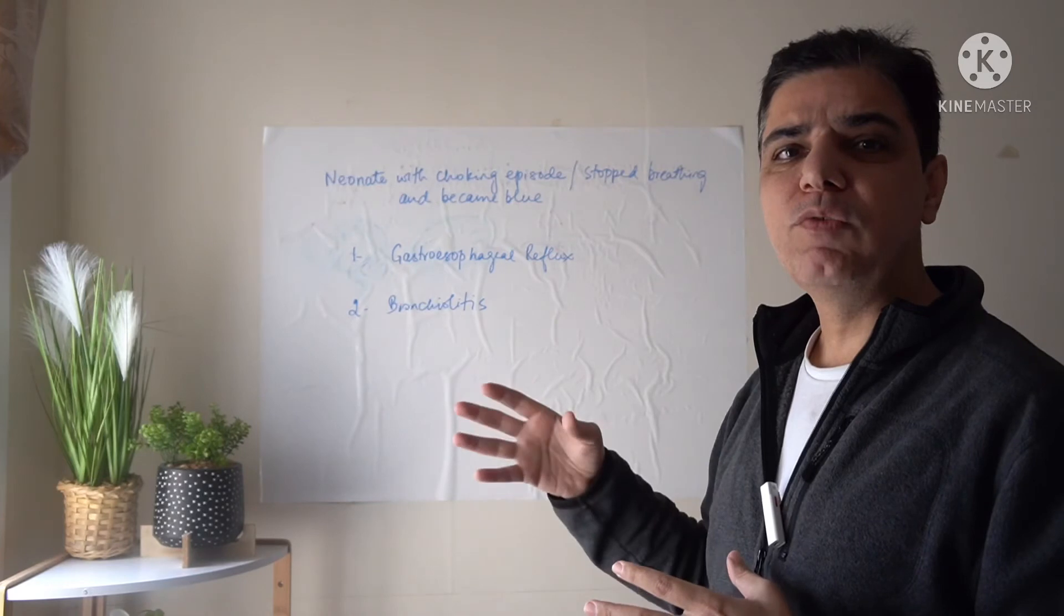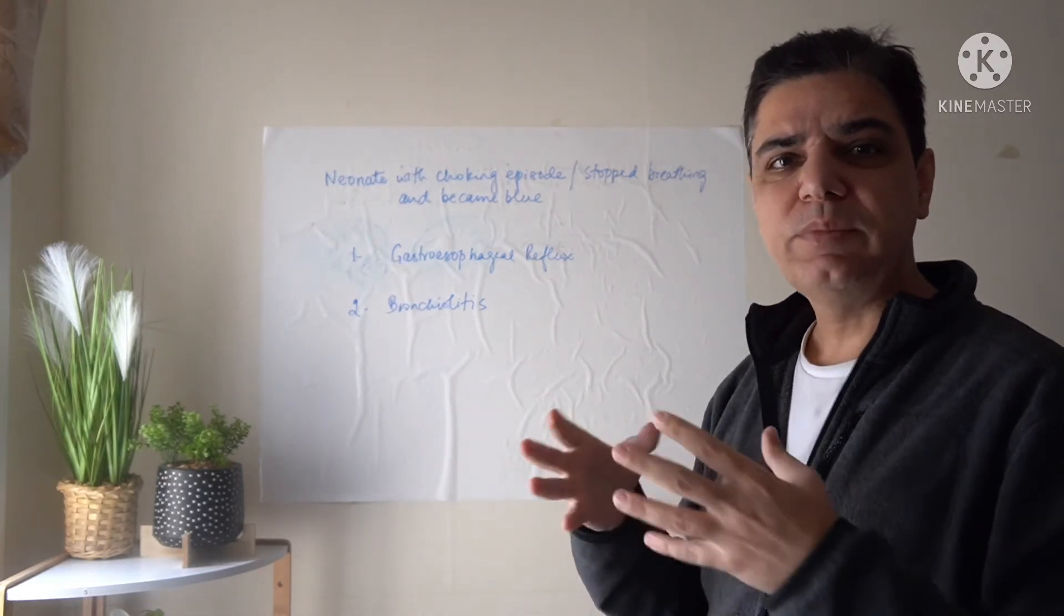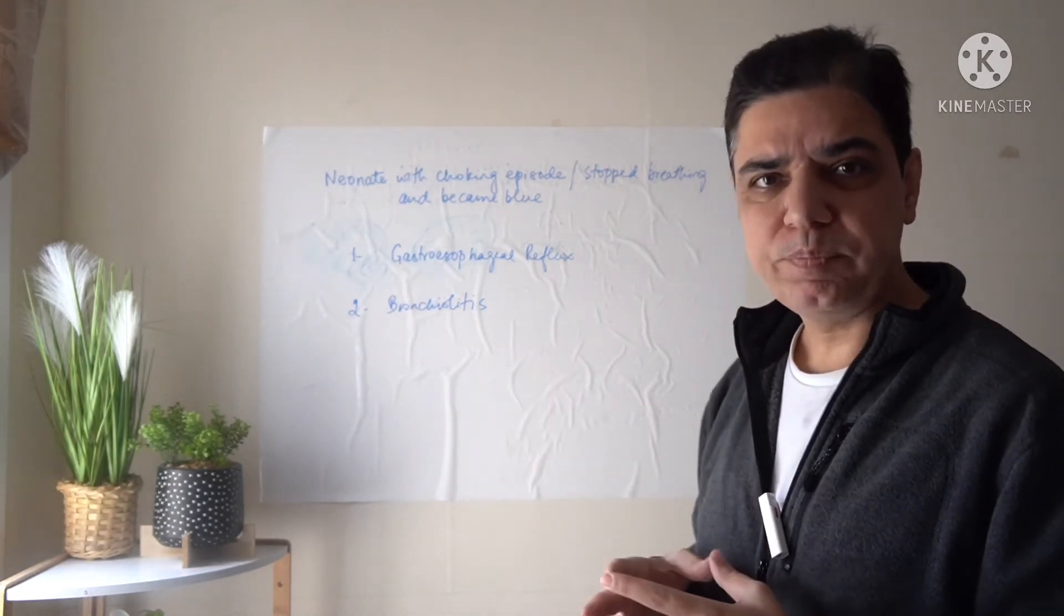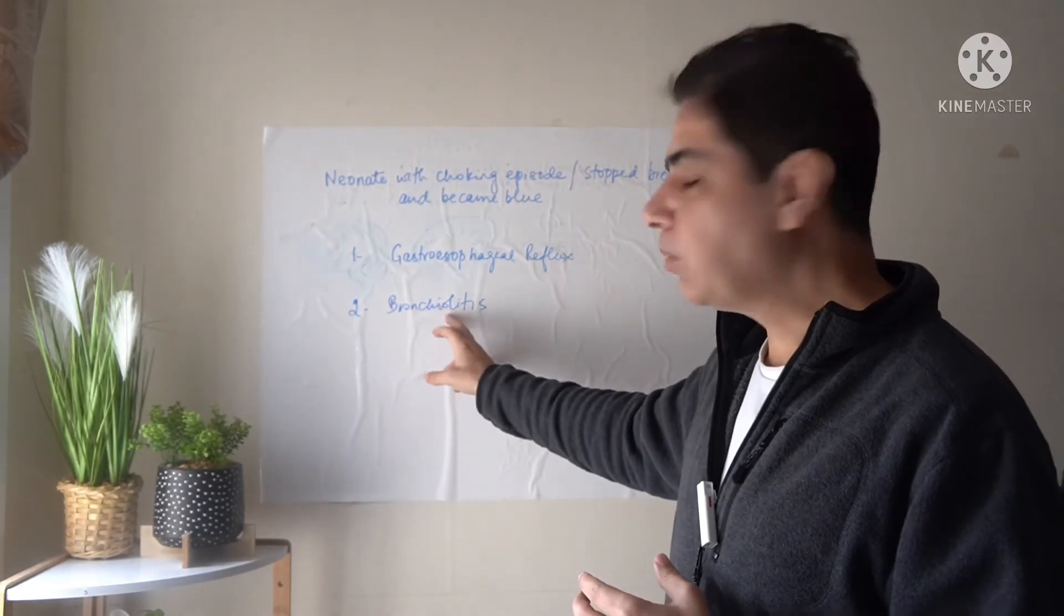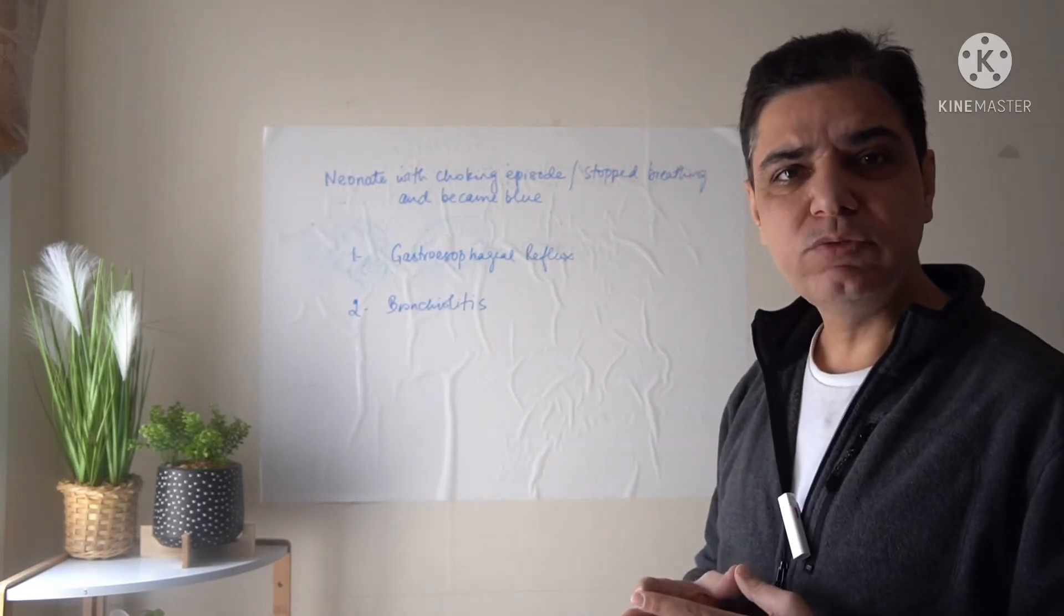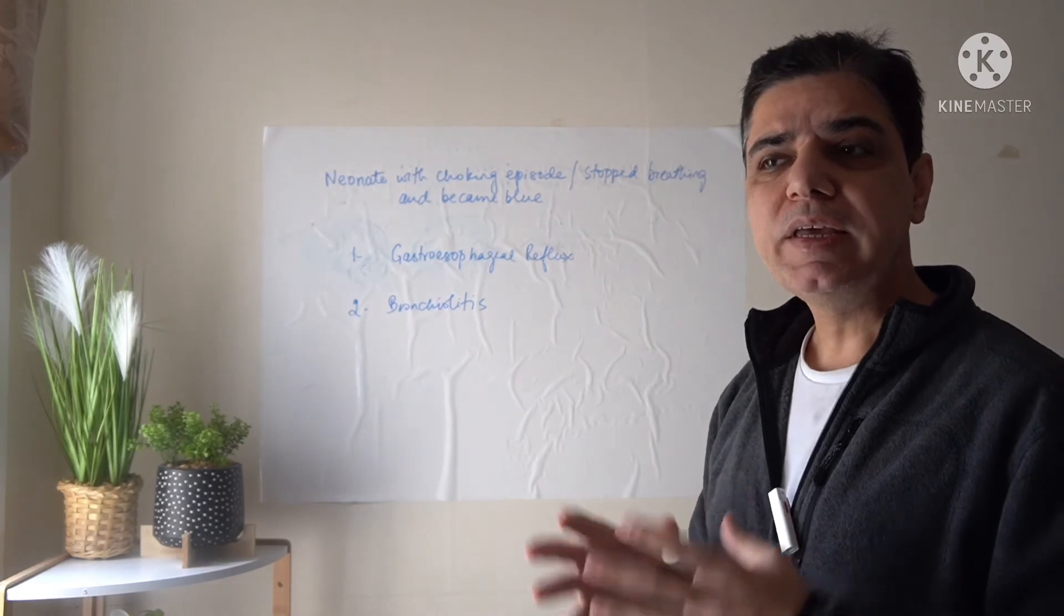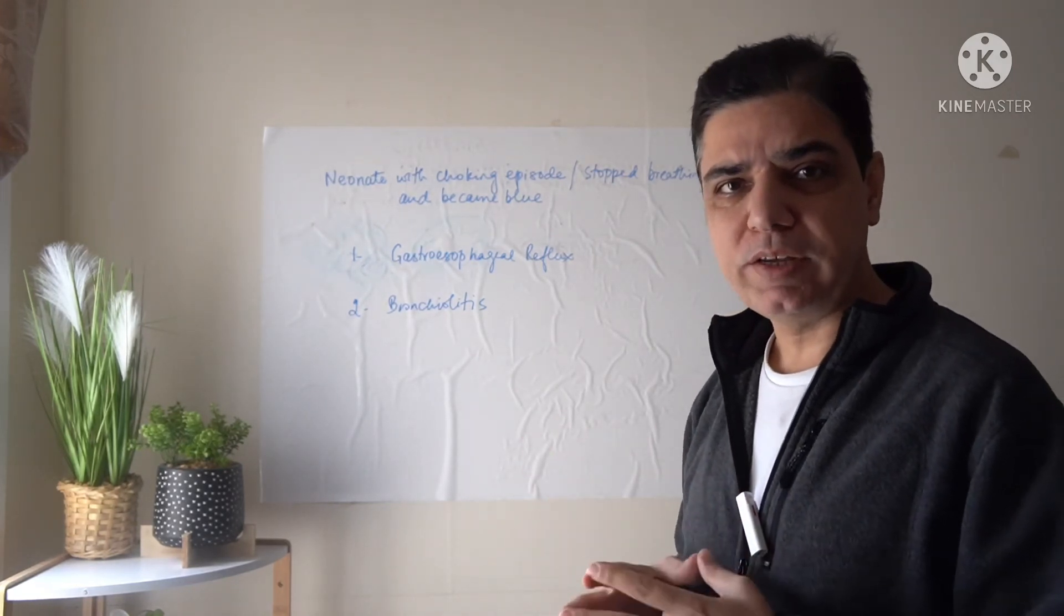So the child chokes, he might become blue for a while, and as the spasm relaxes he gets his color back. The second important cause is bronchiolitis, especially in those babies who are premature. This might be the only clinical representation of bronchiolitis.